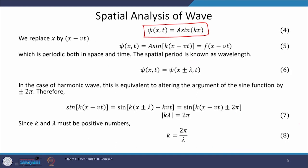Since a wave is moving, velocity v must appear in the wave function expression. We insert velocity by replacing x with (x − vt). This makes the wave function a function of both x and t. The resultant wave function becomes A sin(kx − vkt), which is sinusoidal and periodic both in space and time.